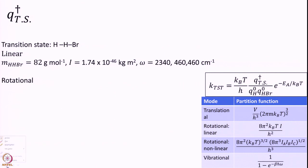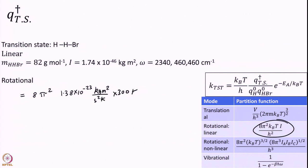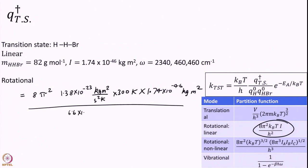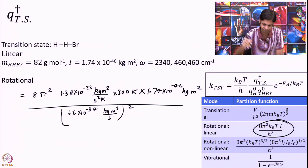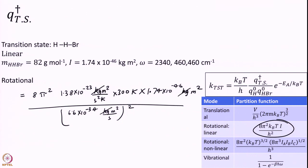For the rotational partition function we use the linear formula: 8π²K_B × moment of inertia divided by h². Using K_B = 1.38×10⁻²³ kg·m²·s⁻²·K⁻¹ and the provided moment of inertia, we verify unit cancellation — kilograms cancel, m⁴ cancels, Kelvin cancels, seconds cancel — giving a dimensionless result as expected.